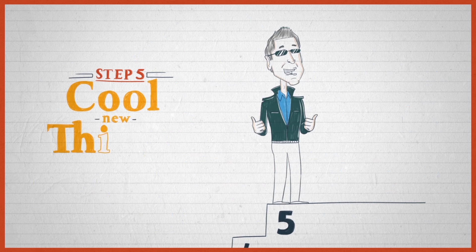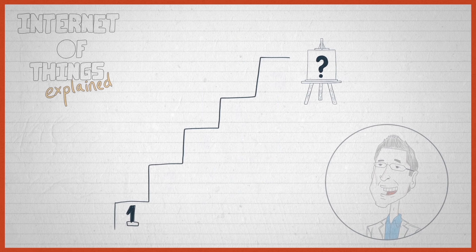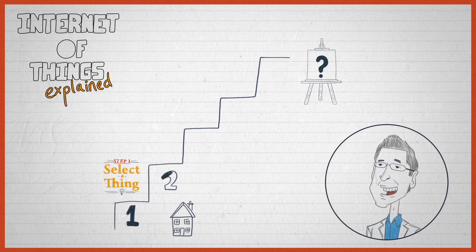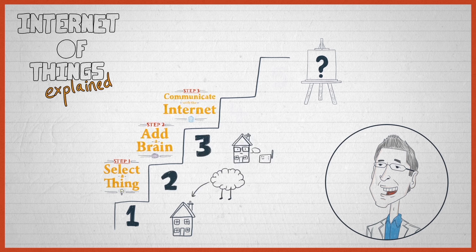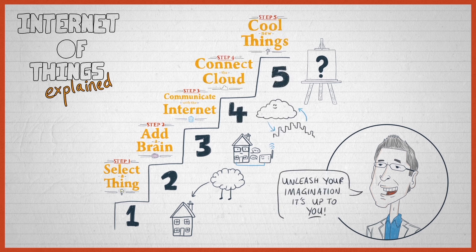And so you get to step five, which is making cool new things happen. What happens in this step will be driven by the problems you have or by the opportunities you see, so this step should only be limited by imagination. Once you select things, embed a brain, hook it to the internet — once that infrastructure, that framework, that skeleton is in place — the rest is about unleashing imagination.